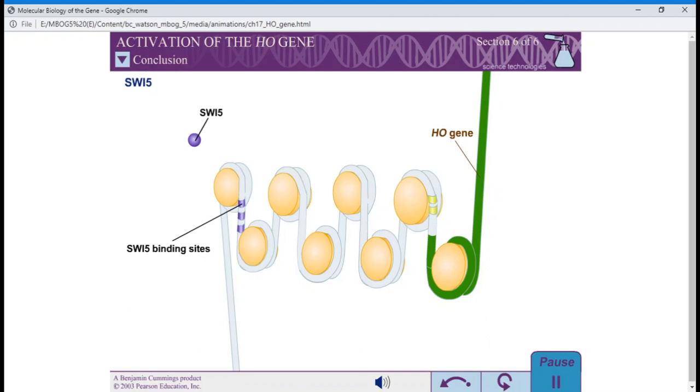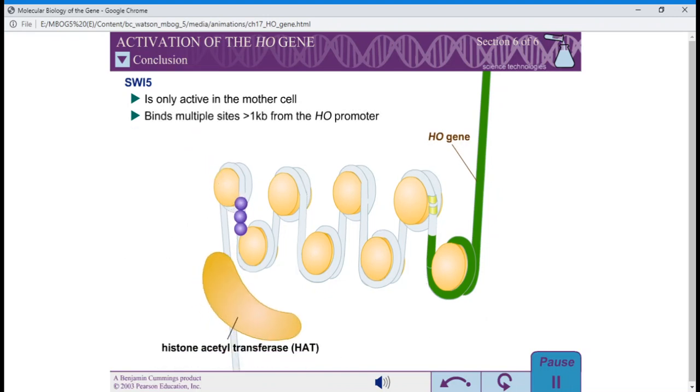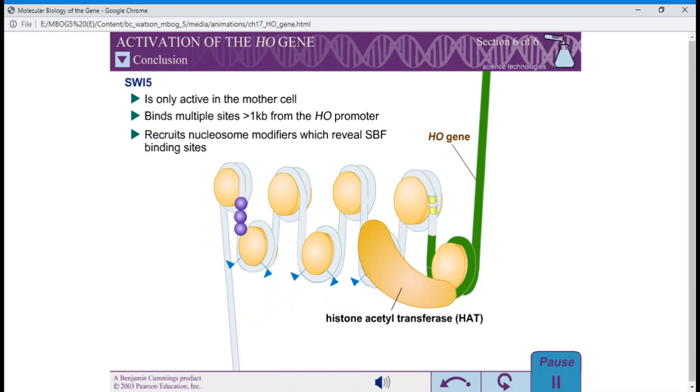SWIFI-5 is only active in the mother cell. SWIFI-5 binds to multiple sites more than 1,000 bases from the HO promoter and recruits nucleosome modifiers which reveal the SBF binding sites.